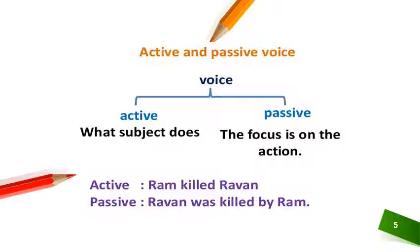As you can see in the example: 'Ram killed Raman,' and its passive voice is 'Raman was killed by Ram.' So you can now easily understand the difference between active and passive, as you also studied in the previous lectures in class as well.